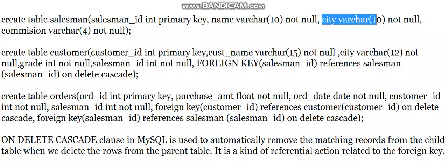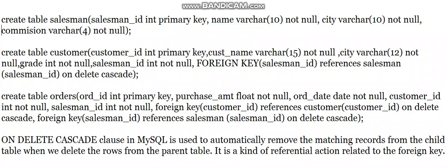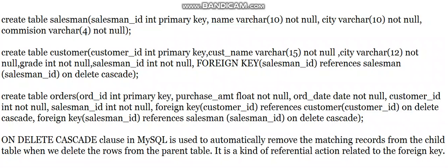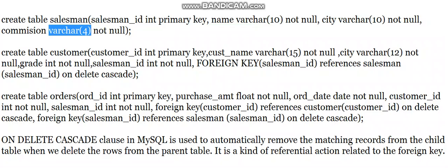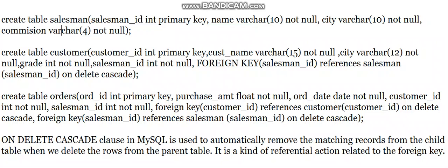Next is city, which is VARCHAR with a NOT NULL constraint. Then commission — I am taking it as VARCHAR because I am storing values like '15%' or '20%', including the percent character. Users can alternatively use INT or FLOAT if they remove the percent sign. I have added NOT NULL for commission as well.